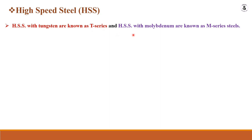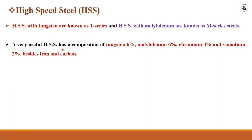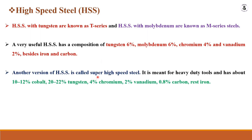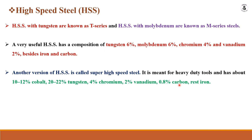For low-cost applications, the M-series material is preferred, while some applications require T-series. A very useful HSS composition contains 6% tungsten, 6% molybdenum, 4% chromium, up to 2% vanadium, with the rest being iron and carbon. Another version is the super high speed steel for heavy duty tools, containing 10 to 12% cobalt, 20 to 22% tungsten, 4% chromium, 2% vanadium, and 0.8% carbon — a eutectoid steel — with the rest being iron.